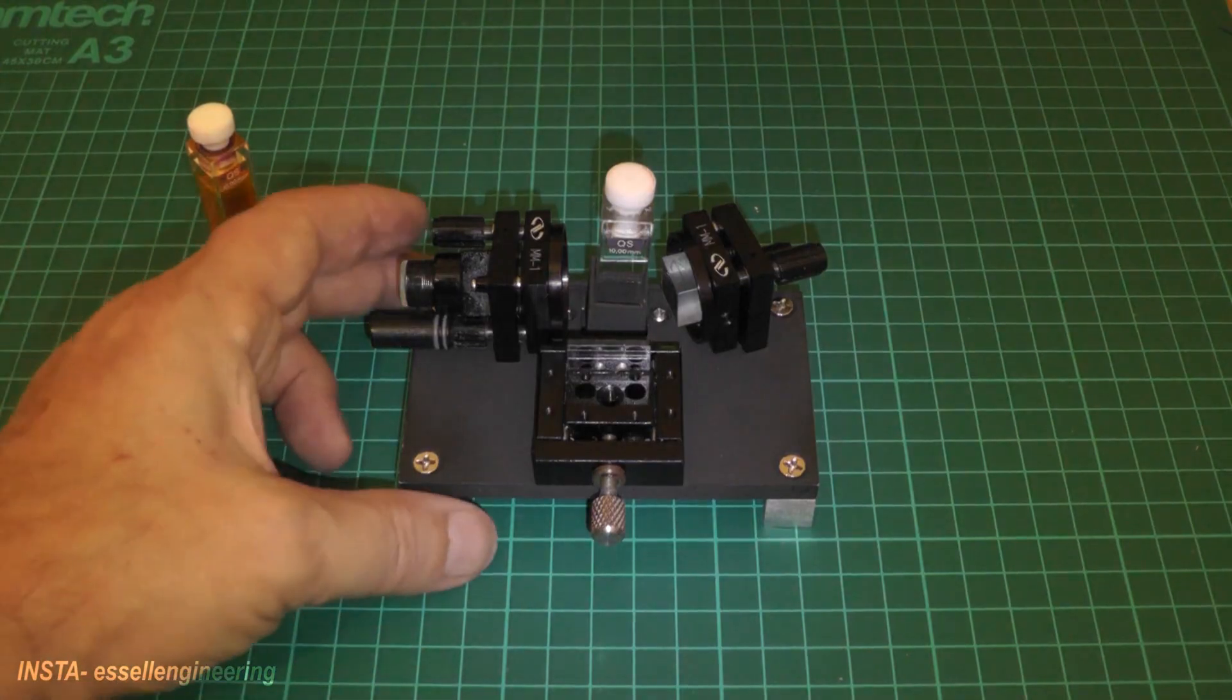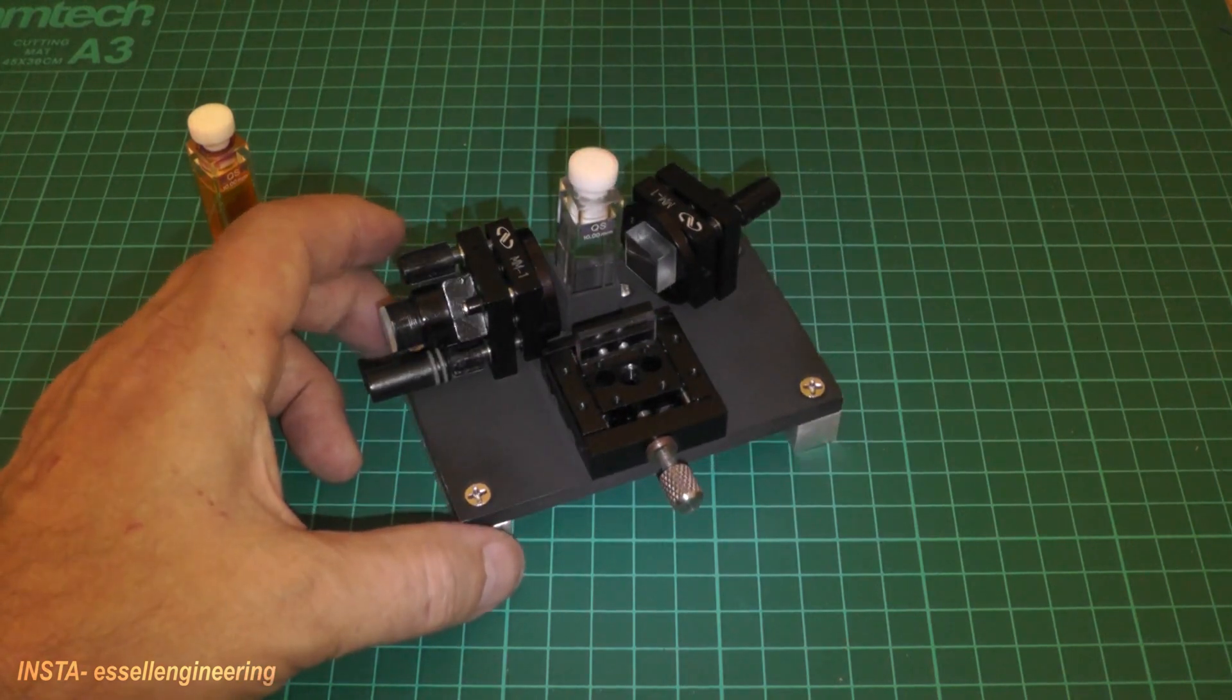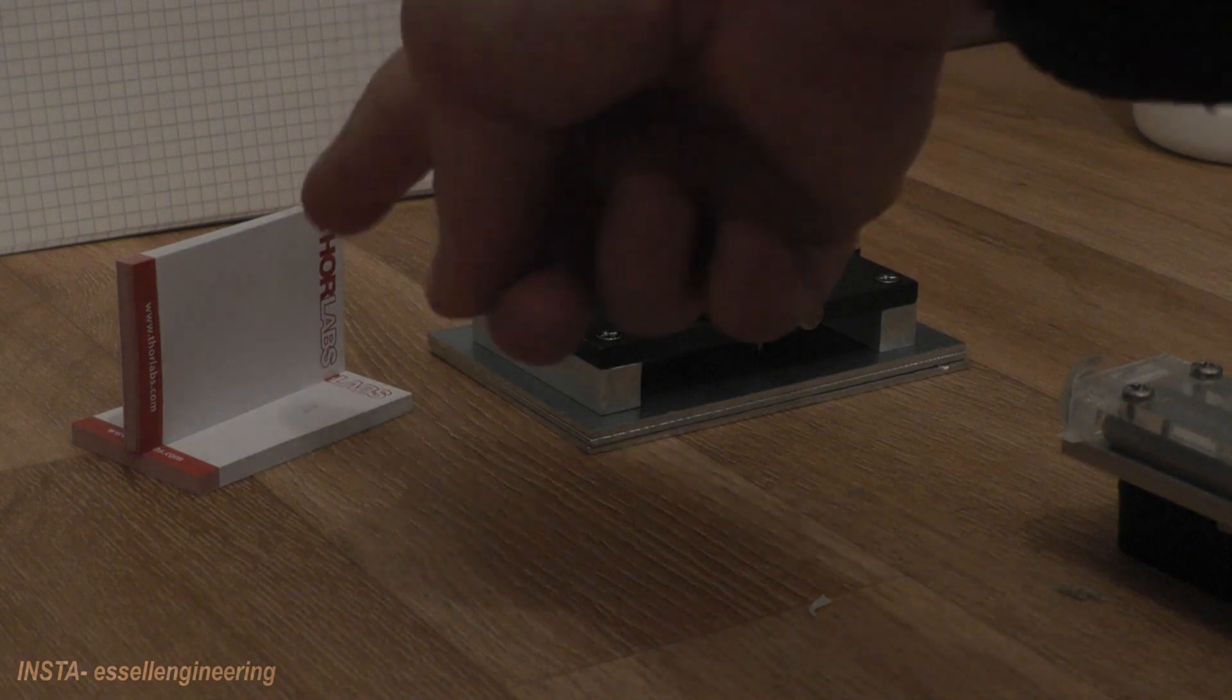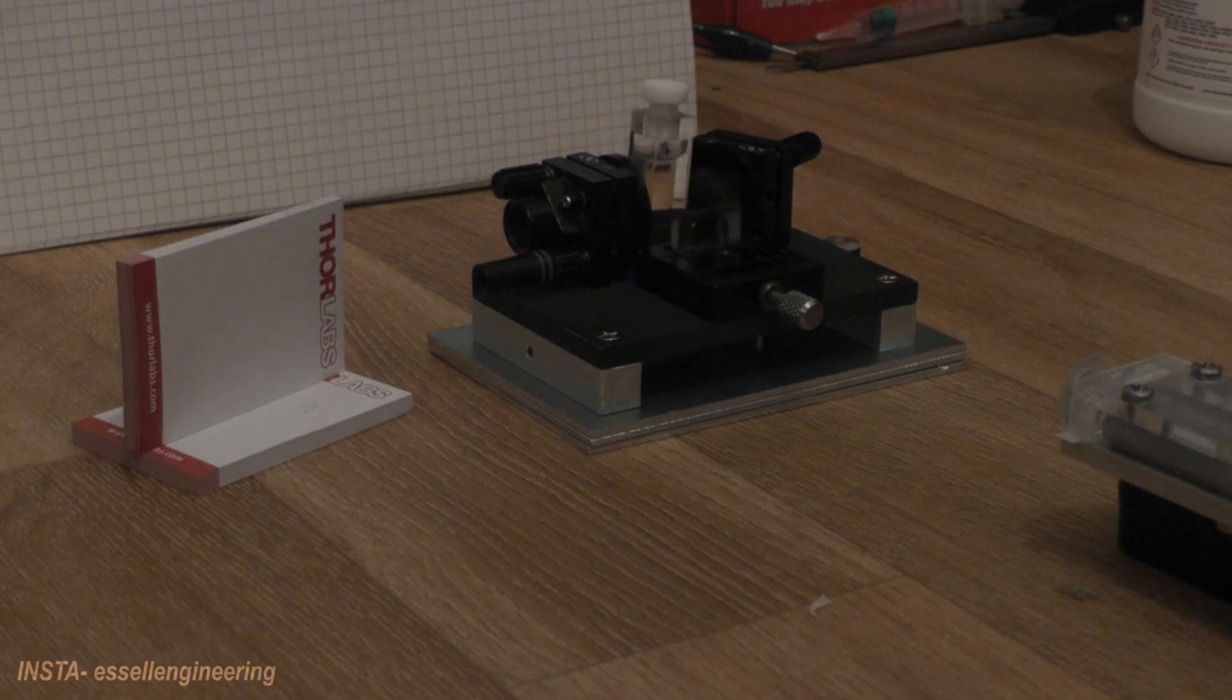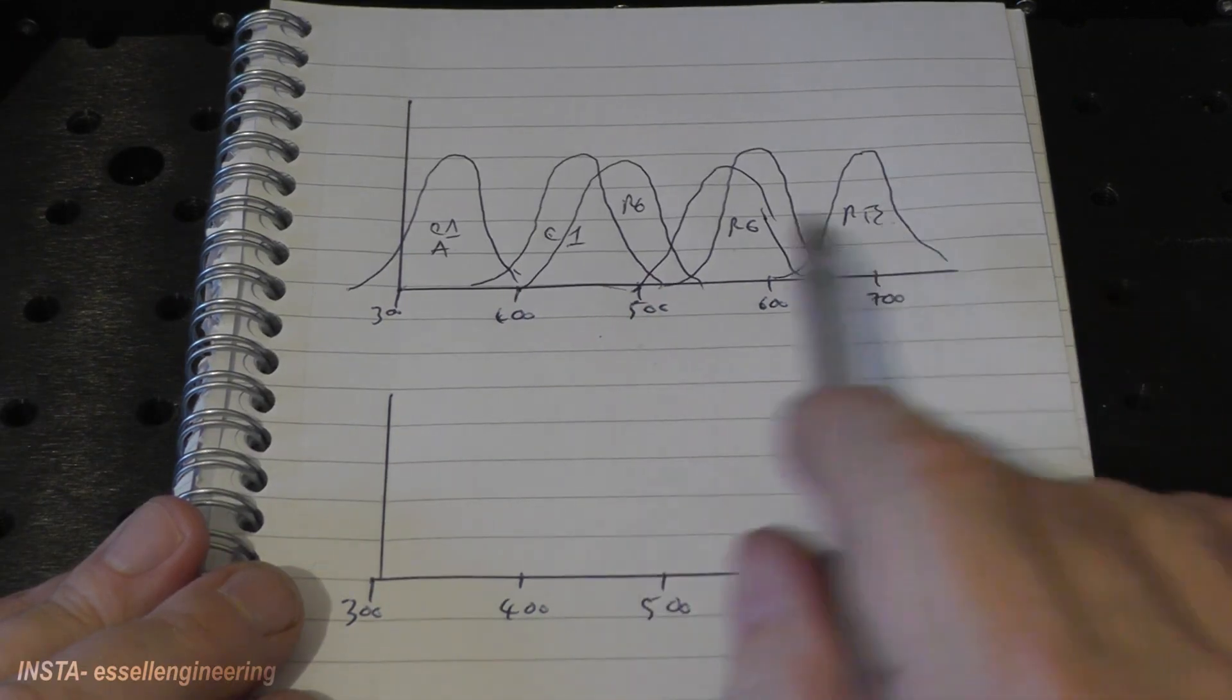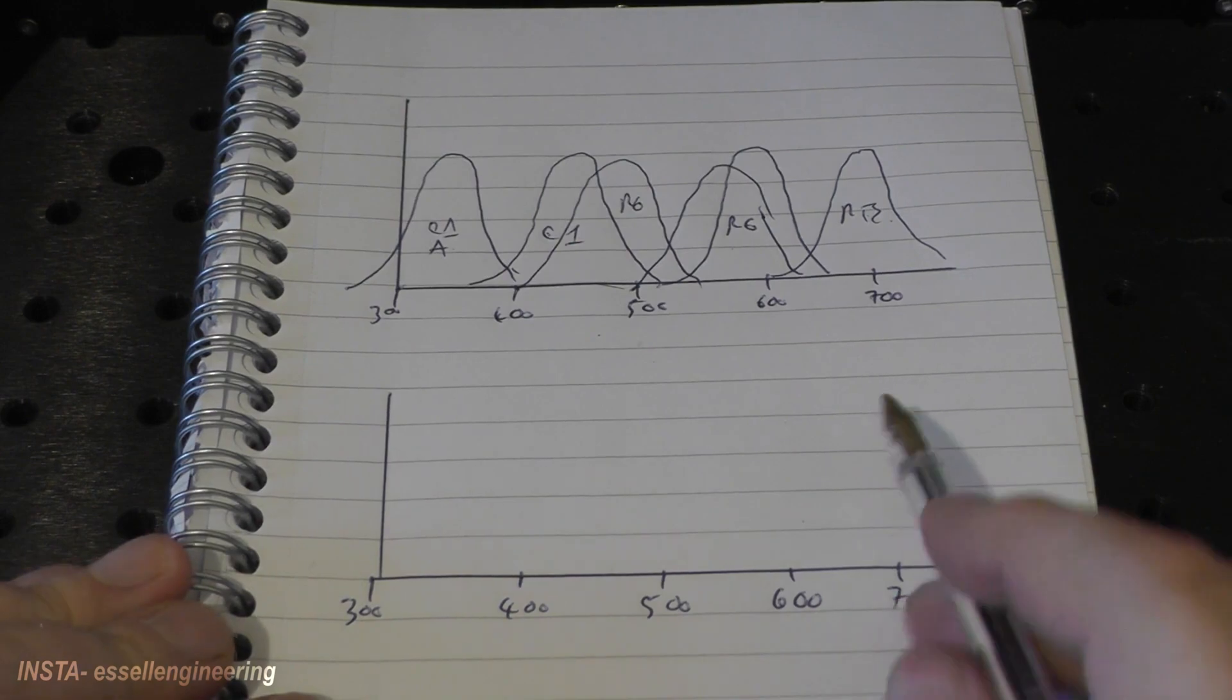And number three on our list is liquid laser which is also known as dye laser. A dye laser is a laser that uses an organic dye as a laser medium, usually as a liquid solution. Compared to gases and solid-state lasing medium, a dye can usually be used for a much wider range of wavelength, often spanning 50 to 100 nanometers or more. The dye rhodamine 6G, for example, can be tuned from 635 nanometer to 560 nanometer and produces pulses as short as 16 femtoseconds.